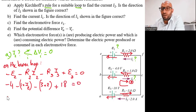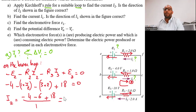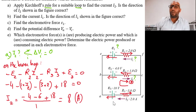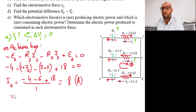Solving for I2: I2 equals negative 4, minus 6, plus 18, all divided by 1 ohm. So the current I2 equals 8 amperes. Since I2 is a positive quantity, the direction of I2 shown in the figure is correct.